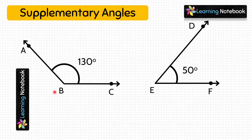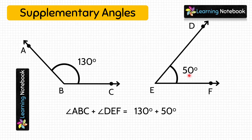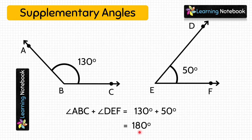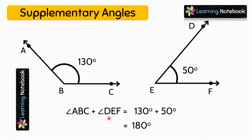Now, if we add the measures of both these angles, that is 130 degrees plus 50 degrees, we get 180 degrees. This means both the angles are supplementary angles because the sum of their measures is 180 degrees. Also, we can say that both the angles are supplements of each other. This means Angle ABC is a supplement of Angle DEF, or Angle DEF is a supplement of Angle ABC.